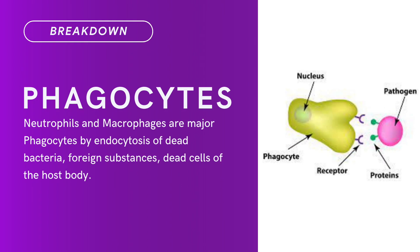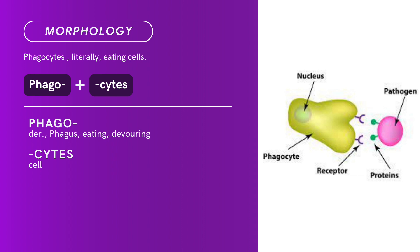Compound term: phagocytes. Brief definition: neutrophils and macrophages are major phagocytes — by endocytosis of dead bacteria, foreign substances, and dead cells of the host body. Term morphology: phagocytes literally means 'eating cells.' Compound of phago plus cytes. Phago is derived from phagos, meaning eating or devouring. Cytes means cell. There you have it — compound term phagocytes.